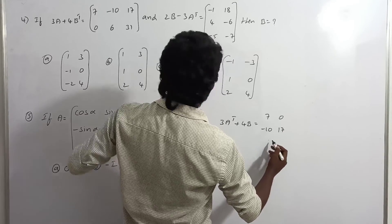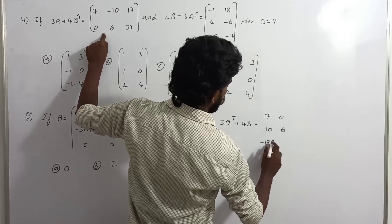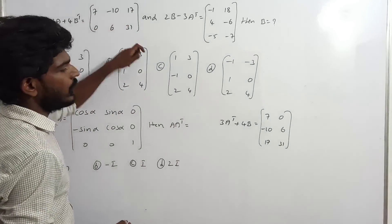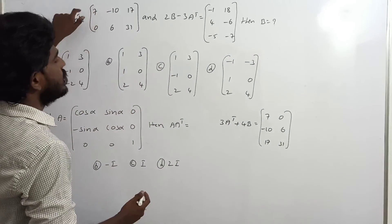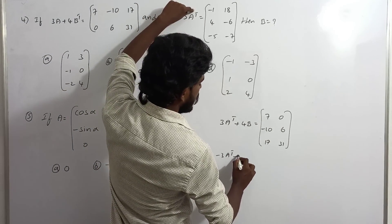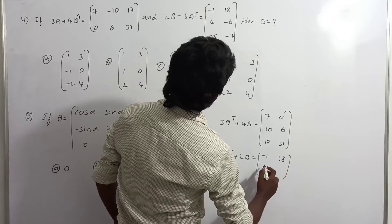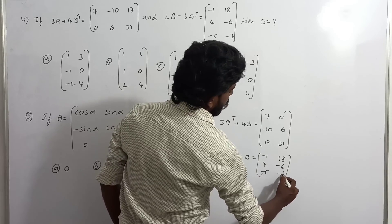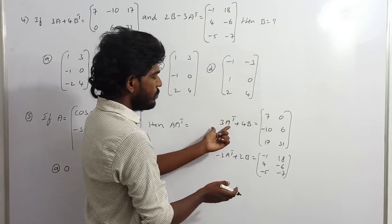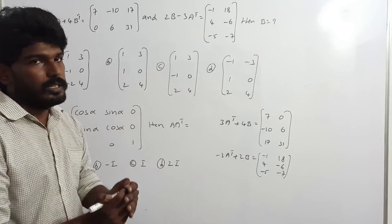Working through the numbers: after applying transpose, we get values 10, 6, plus 17, 13, 1. Then 7 minus 10, 0, 6, 31. We use the given values from 2B minus 3A transpose and add equations. 3A transpose terms cancel, giving us the value of B.